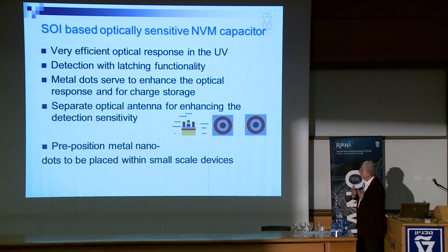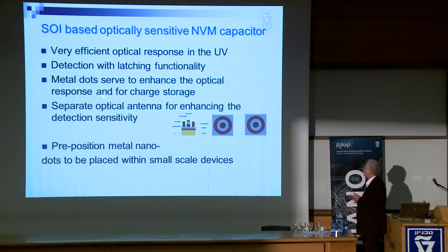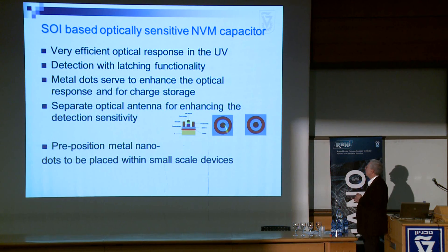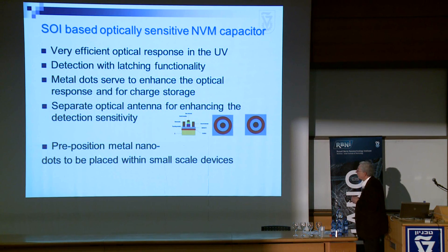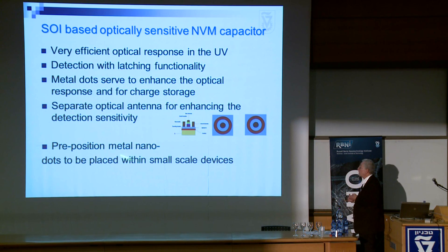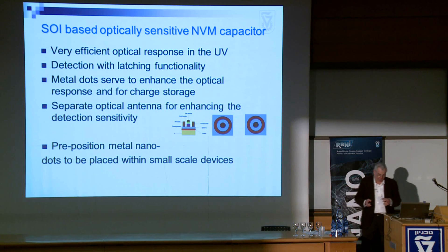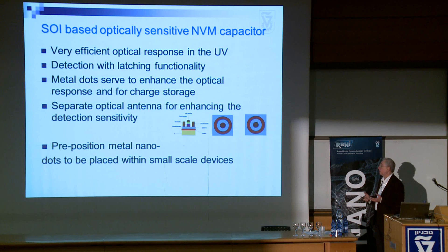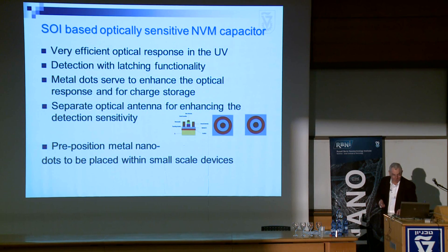From this point on we take things further, working in a more controllable way. We will separate the storage functionality from the detection enhancement, and make well-defined metal nano-antennas on the surface on top of the contact for the enhancement. Even more importantly, we have started developing a technique to make pre-positioned metal nano dots, enabling us to make the same type of devices on a much smaller scale — gaining both in the area that the silicon takes and in the potential speed at which it works.